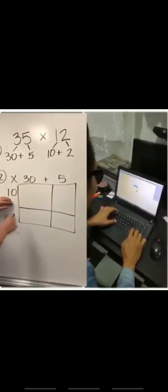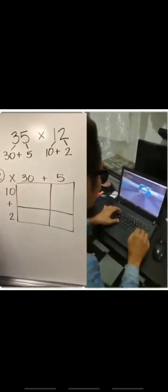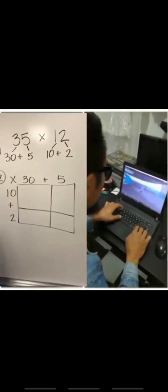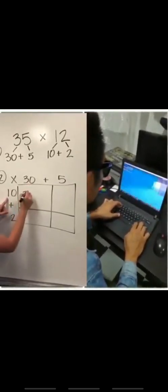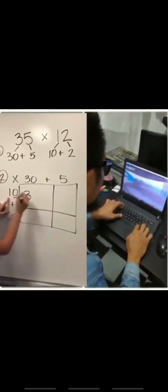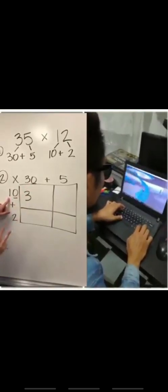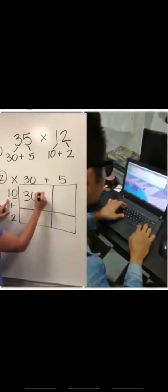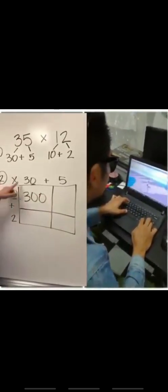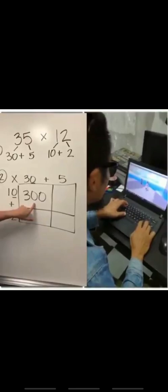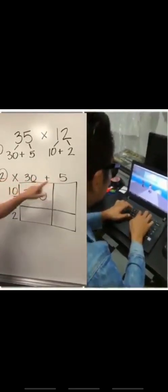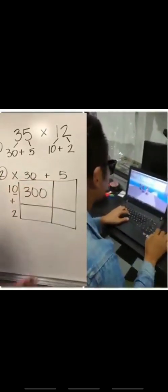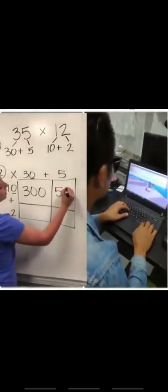So first we're going to do 10 times 30. Sometimes it gets a little tricky when we have those extra zeros on there when we're multiplying by a 10. So I like to say 1 times 3 is 3, and how many zeros do we have? We've got 2, so we attach them to the end of the number. So 10 times 30 is 300. We did 10 times this, 10 times that. 10 times 5 is 50, so it goes in the first box.